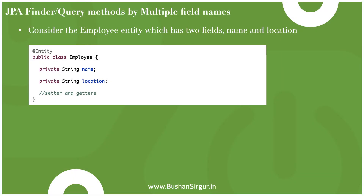Welcome back to the Spring Data JPA tutorial. In this video we are going to discuss finder methods or query methods by multiple field names. In the previous video we discussed finder methods by single field names — if you missed that, make sure to check it out. I've explained what finder methods are and what naming conventions to use. I'll drop a link in the description.